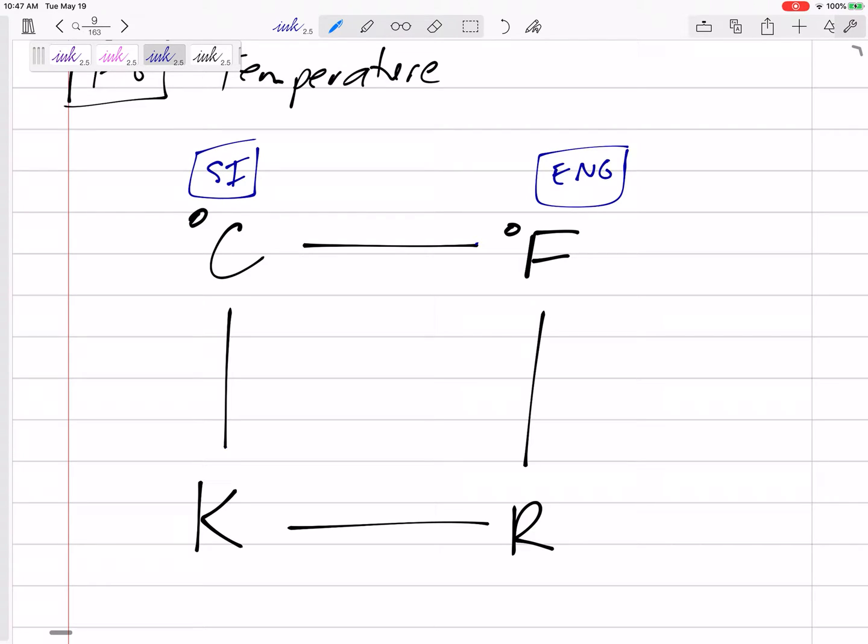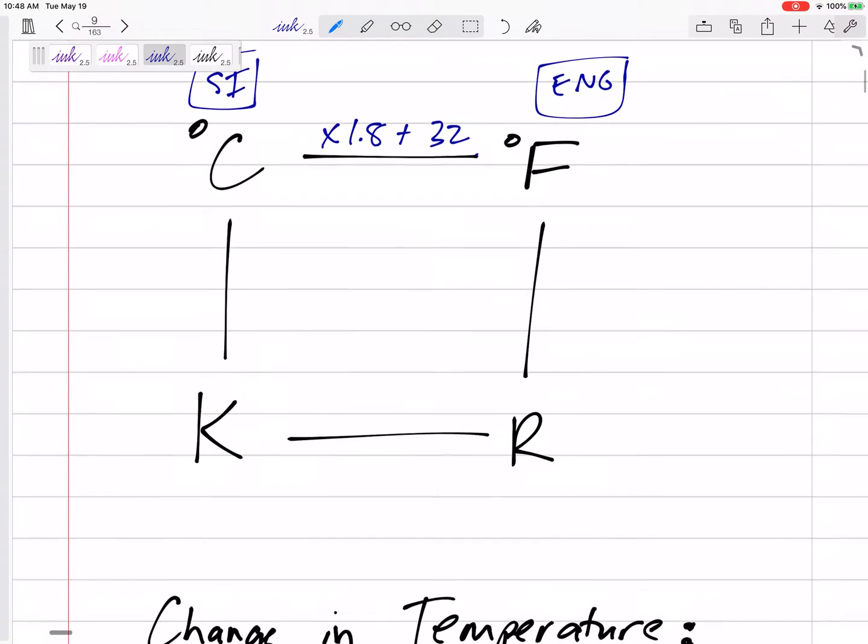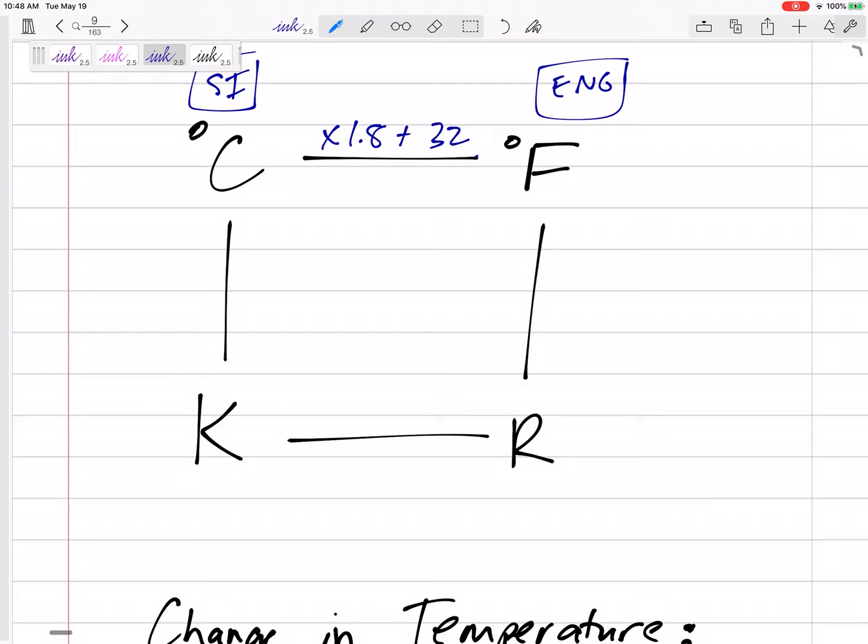So a few conversions - this is on your conversion sheet - but if you take Celsius times 1.8 and plus 32, then you've got Fahrenheit. To convert from Kelvin to Rankin just multiply it times 1.8 to get to Rankin.